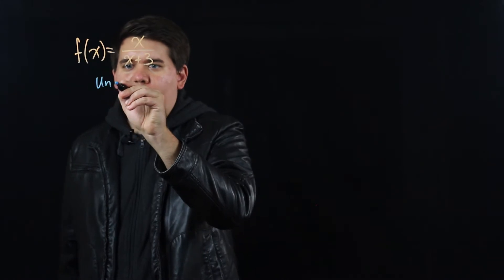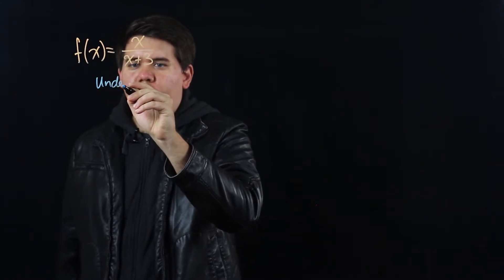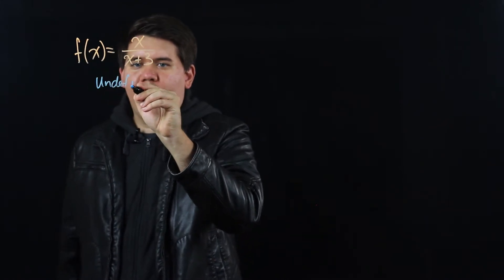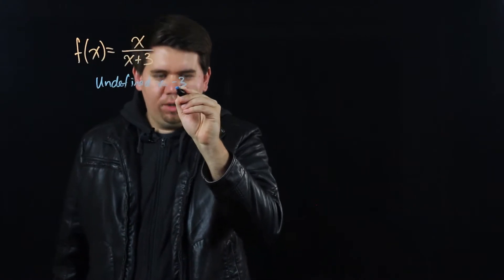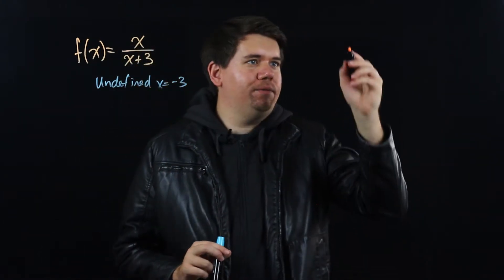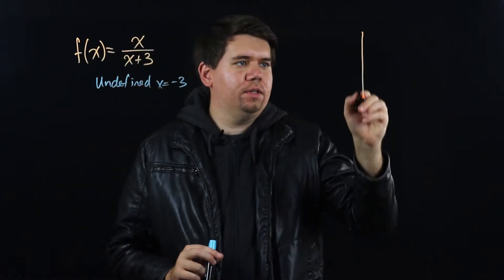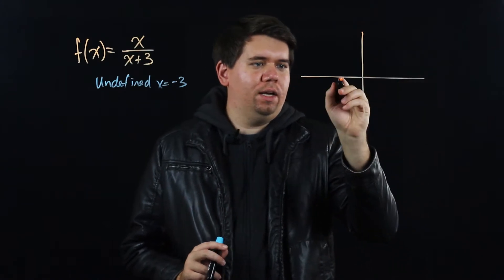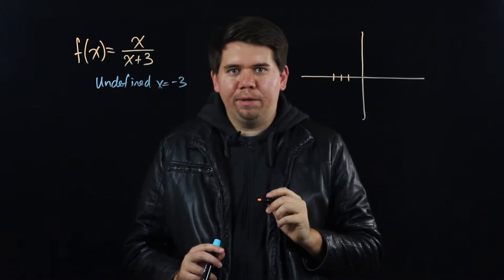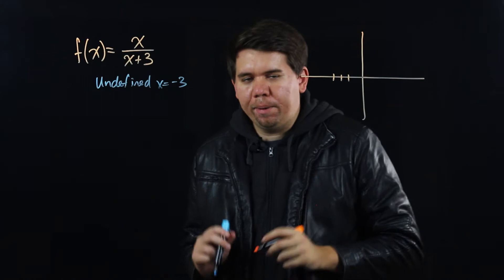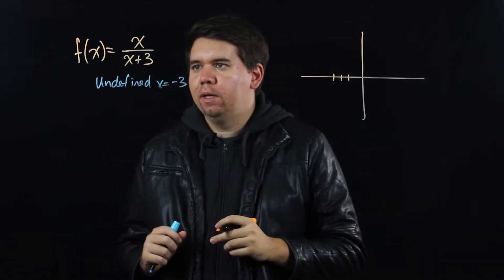The first thing we can do is immediately recognize that the function is undefined when x equals minus 3. So whatever the graph is going to look like, we know that at x = -3 it's undefined. Make a note of that.